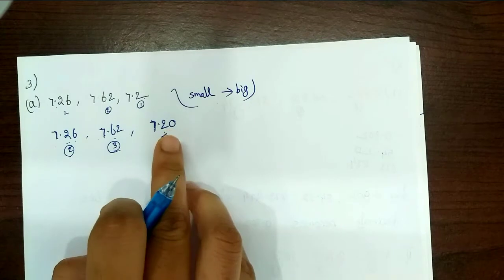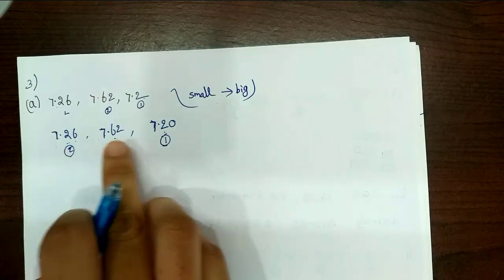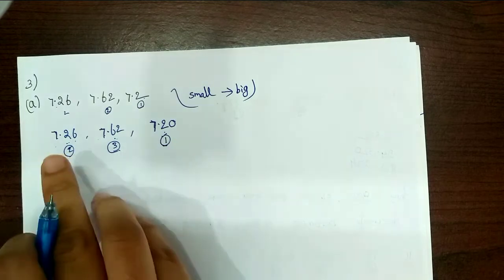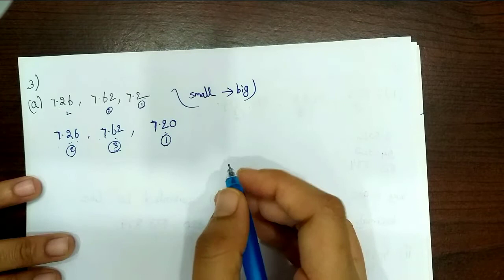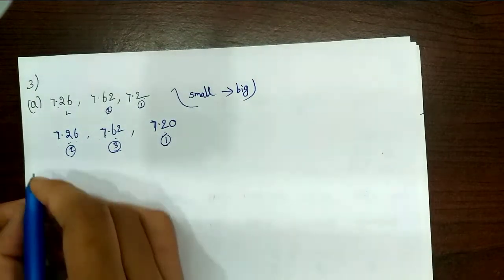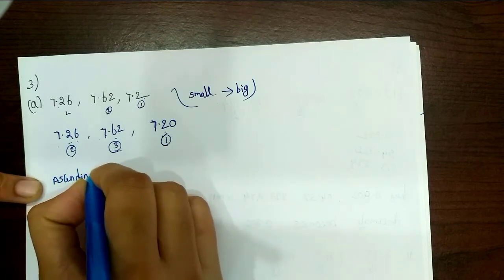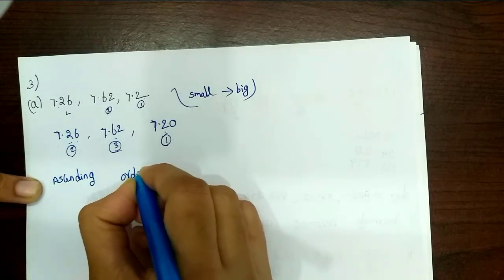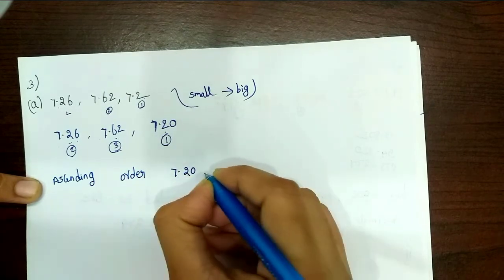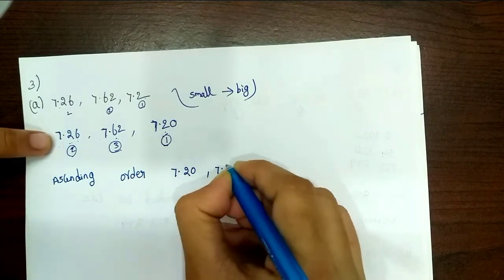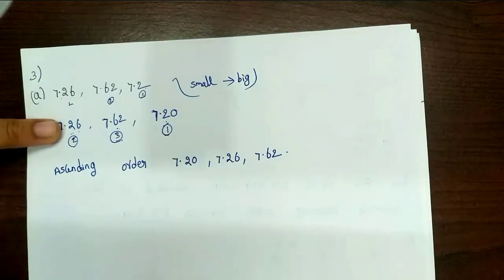Step 1: if unlike decimal fractions, first convert to like decimal fractions. Check the number before the decimal point. If equal, count the digits after the point and compare. So the ascending order is: 7.20 first, next 7.26, then 7.62.